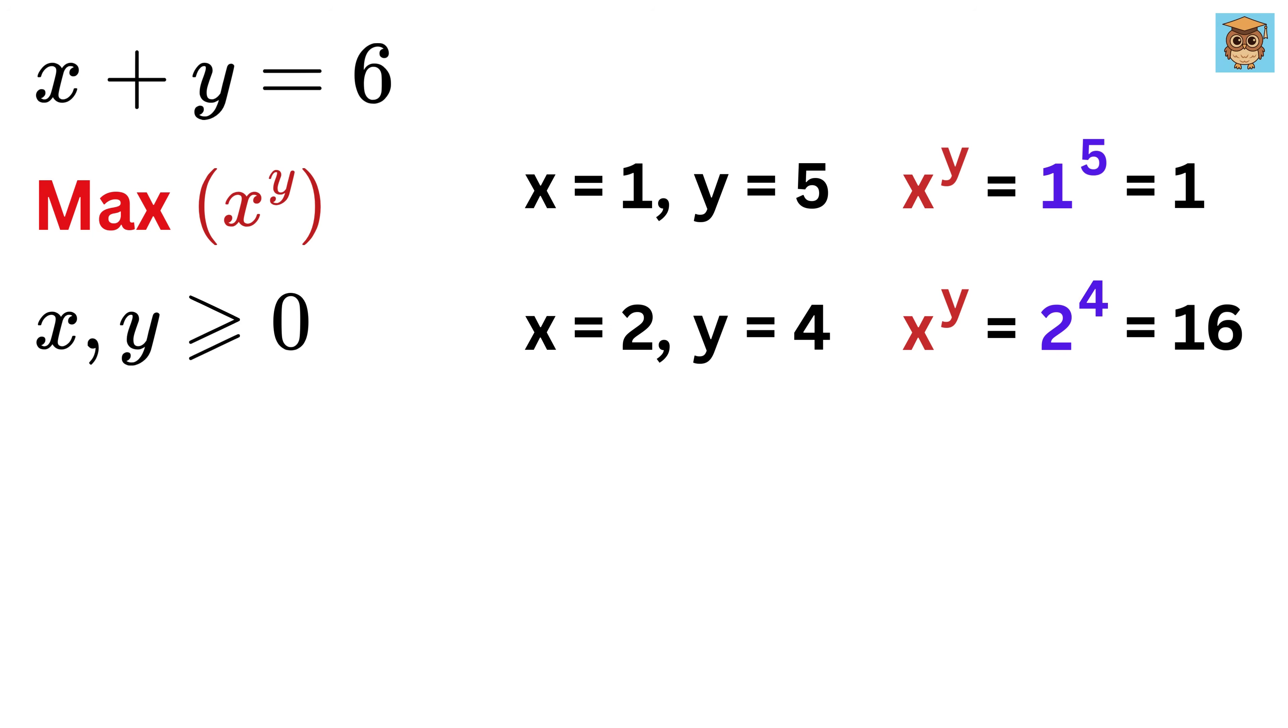If x is 3, y becomes 3, and the value becomes this, which is 27. Then for x equals 4, this will be the value of x to the y.